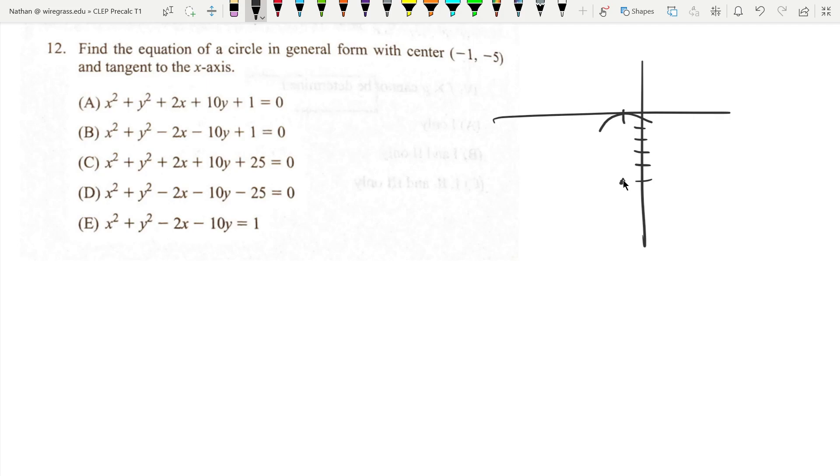So that means it has a radius of one, two, three, four, five. So the radius is five, the center is negative one, negative five.